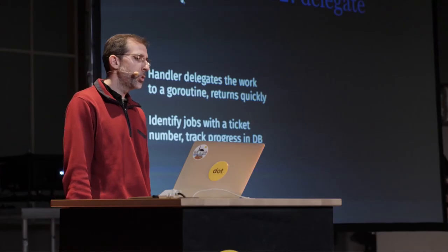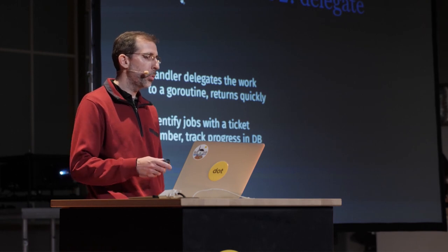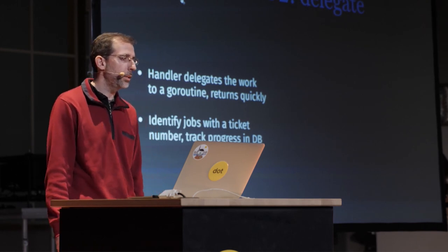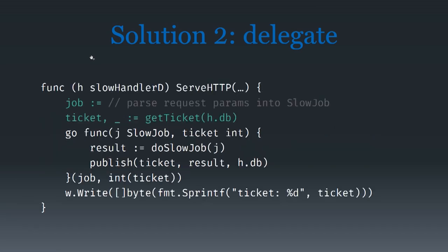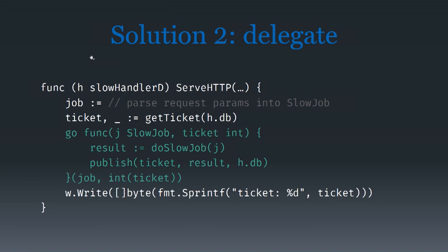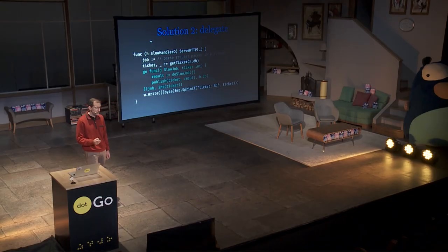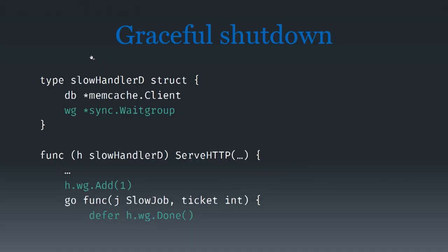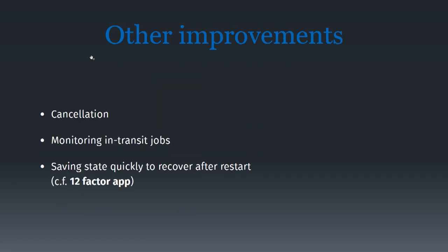This was my second solution: the handler makes a goroutine on the fly and delegates the work to it. We still identify jobs with a ticket ID and track progress in the database — we don't need a channel anymore. We get the job and ticket, then spawn a goroutine directly to handle the work in the background. The one problem is that a server shutdown will kill background jobs, but that's easy to fix with a wait group. We add a wait group to the handler and do arithmetic on it to ensure it stays positive while goroutines are running. This works really well, and you could think of further improvements like cancellation, monitoring, or saving state quickly.